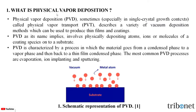What is Physical Vapor Deposition? Physical Vapor Deposition, or PVD, sometimes called Physical Vapor Transport — especially in single crystal growth contexts — describes a variety of vacuum deposition methods which can be used to produce thin films and coatings. PVD, as its name implies, involves physically depositing atoms, ions, or molecules of a coating species onto a substrate.